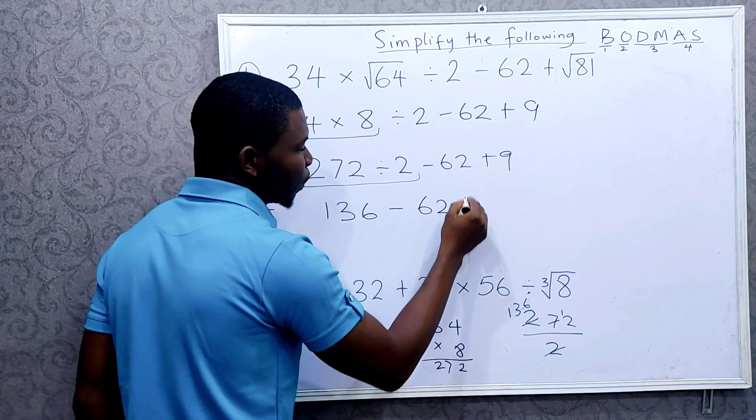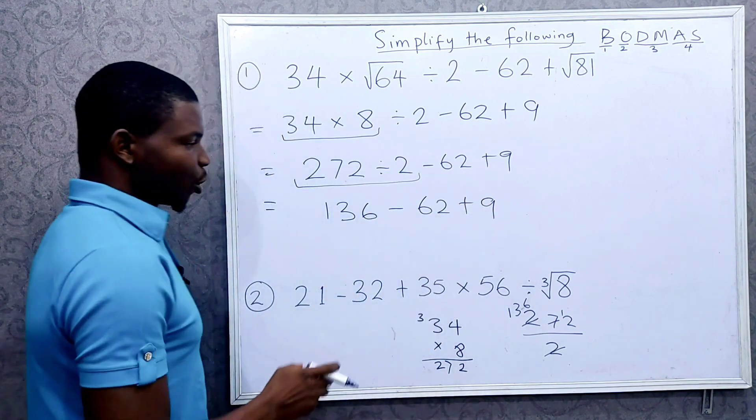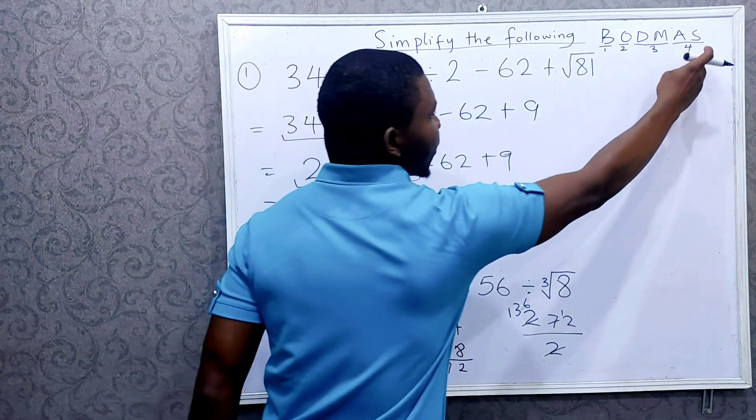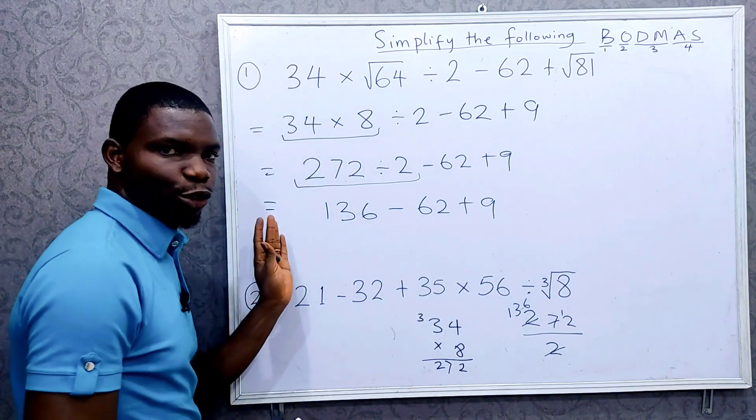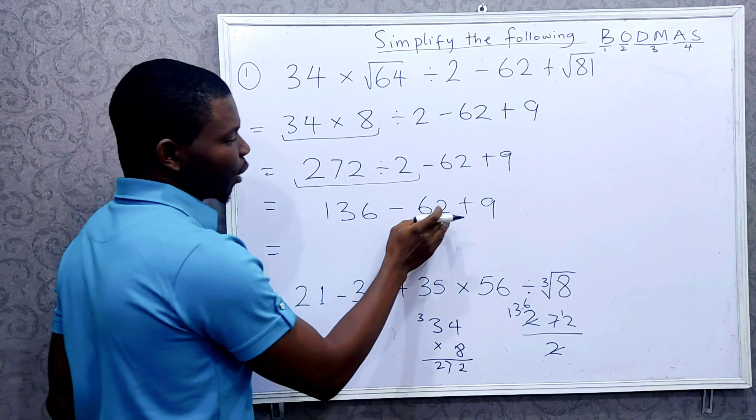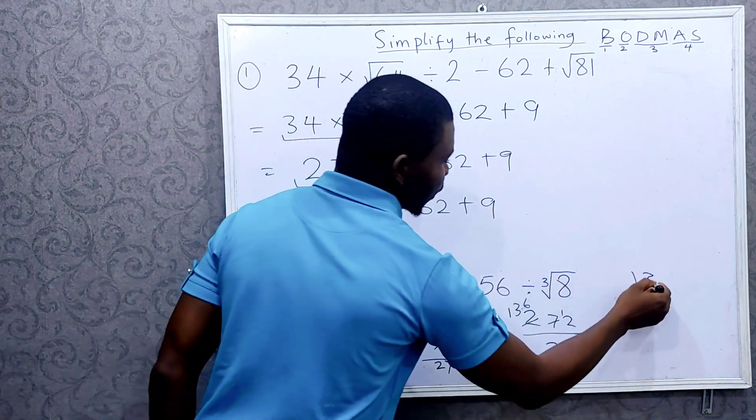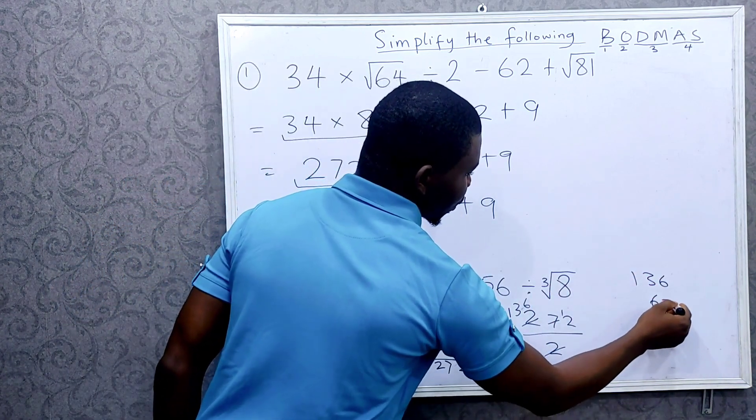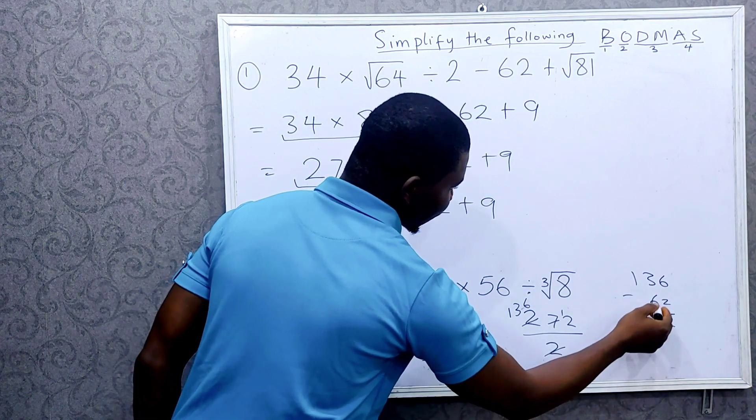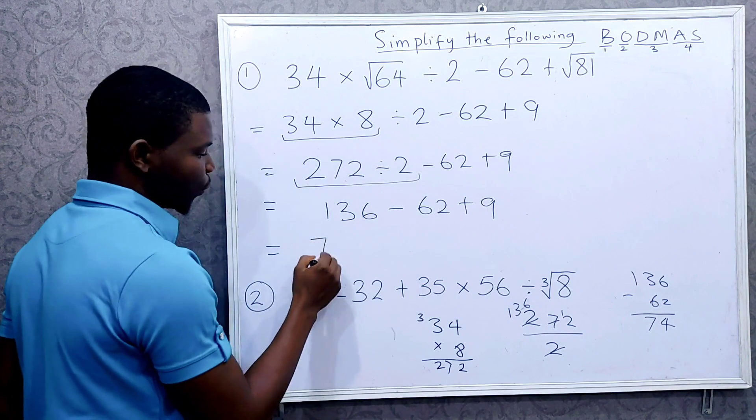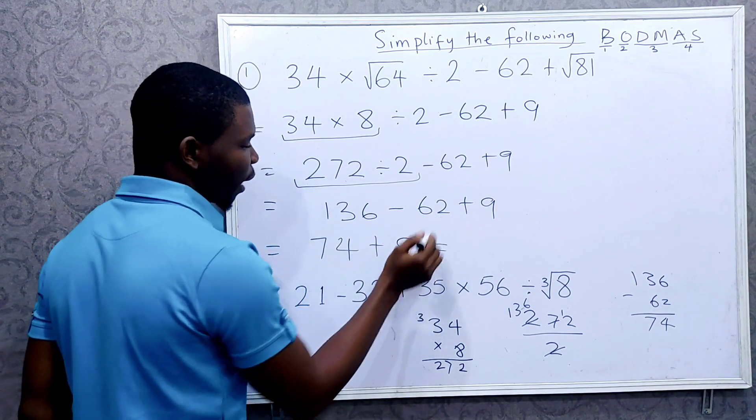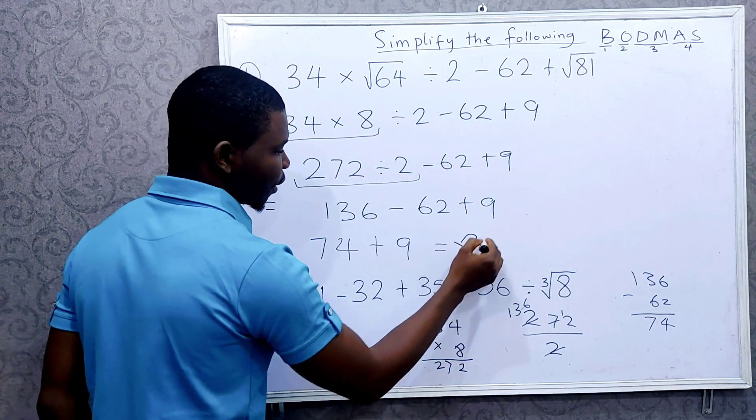So we now have subtraction and addition, and you know both of them are on the same level, so we go from left to right. 136 minus 62. 13 minus 6 is 7, so 74 plus 9. What is 74 plus 9? That is 83. So our answer is 83.